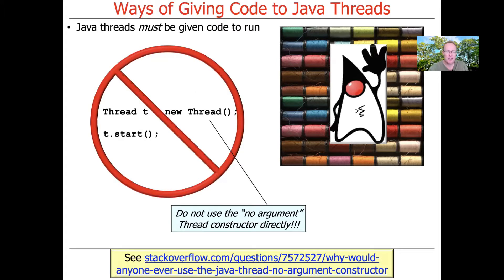In particular, don't use the no-argument thread constructor. There's really not a useful thing at all. If you're curious, you can click on the link at the bottom of the slides that asks the all-important question: why would anyone ever use the Java thread no-argument constructor? And the answer is they probably wouldn't.